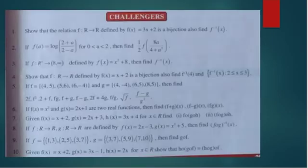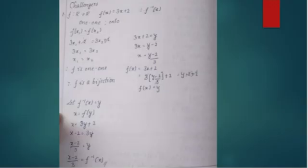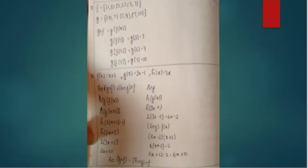Ninth question: f = {(1,3), (2,5), (3,7)} and g = {(3,7), (5,9), (7,10)}, find gof. Also the tenth question involves similar composition. First write f information and g information.